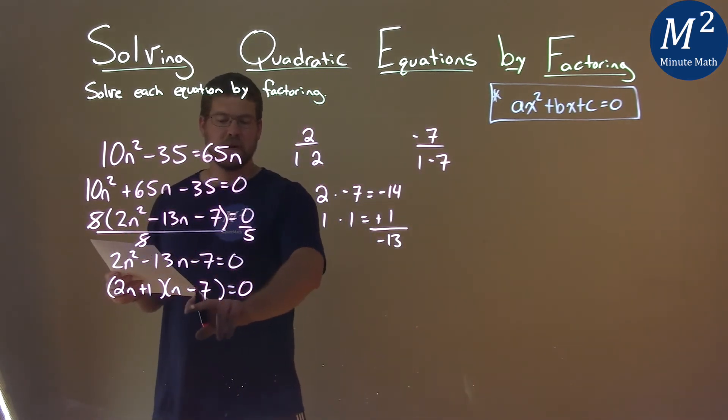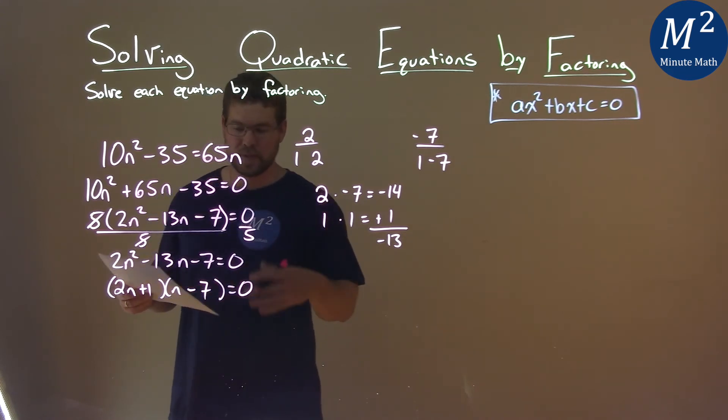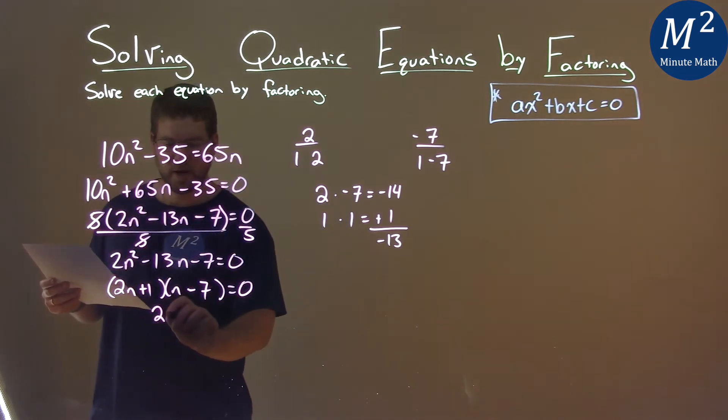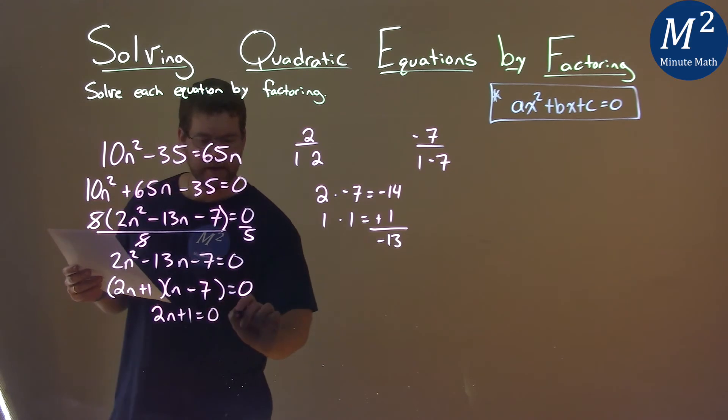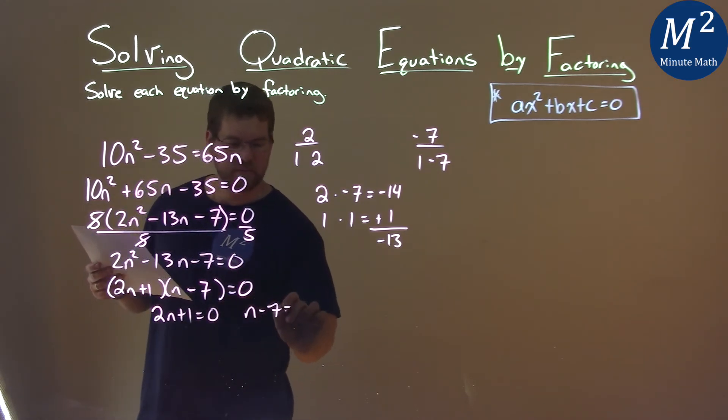So now I take each part individually and solve it, and set it equal to 0. So we take 2n plus 1 equal to 0, and n minus 7 equal to 0.